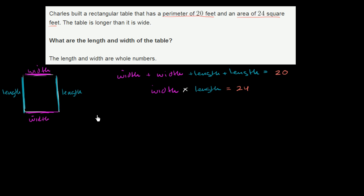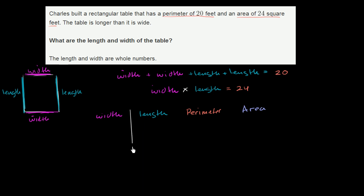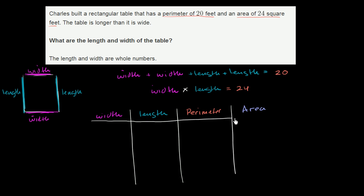So let me make a table here with two columns. One column I'll call width, another column I'll call length. Then I'll write down the perimeter and the area. And then I can try things out, making sure that everything we try out has an area of 24 square feet.